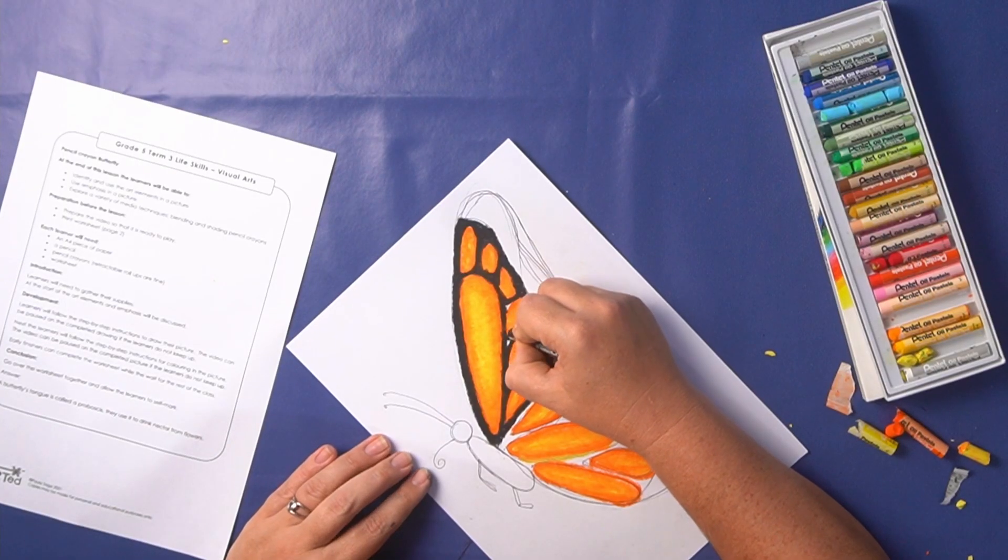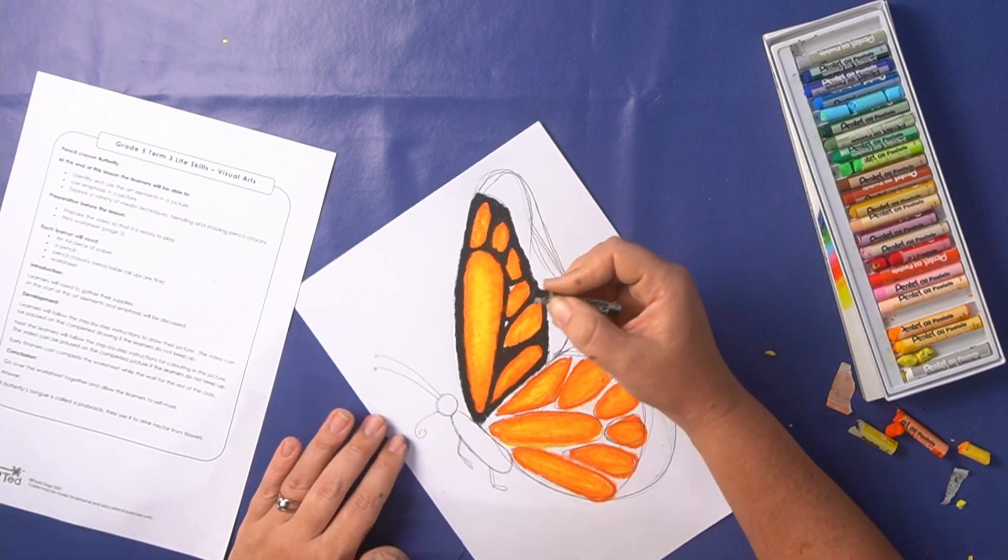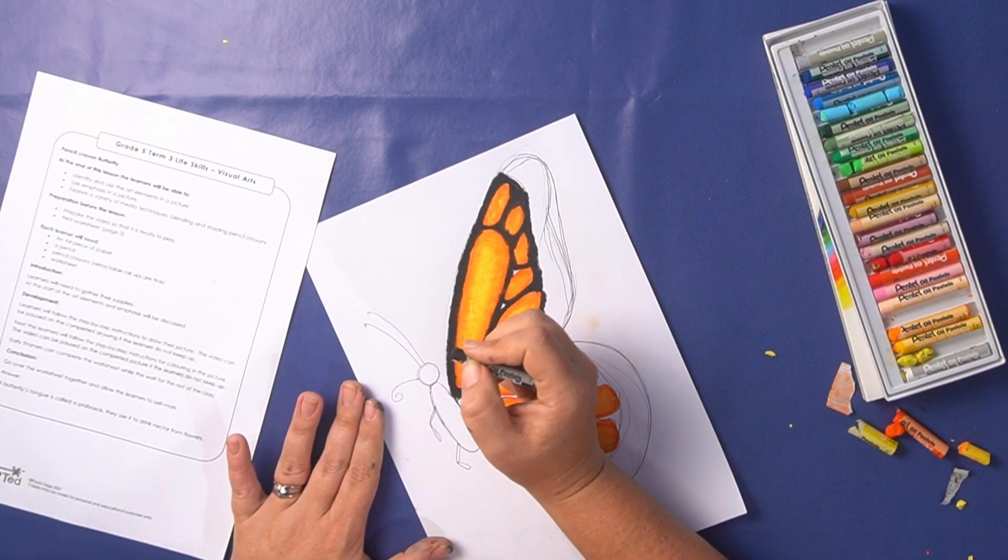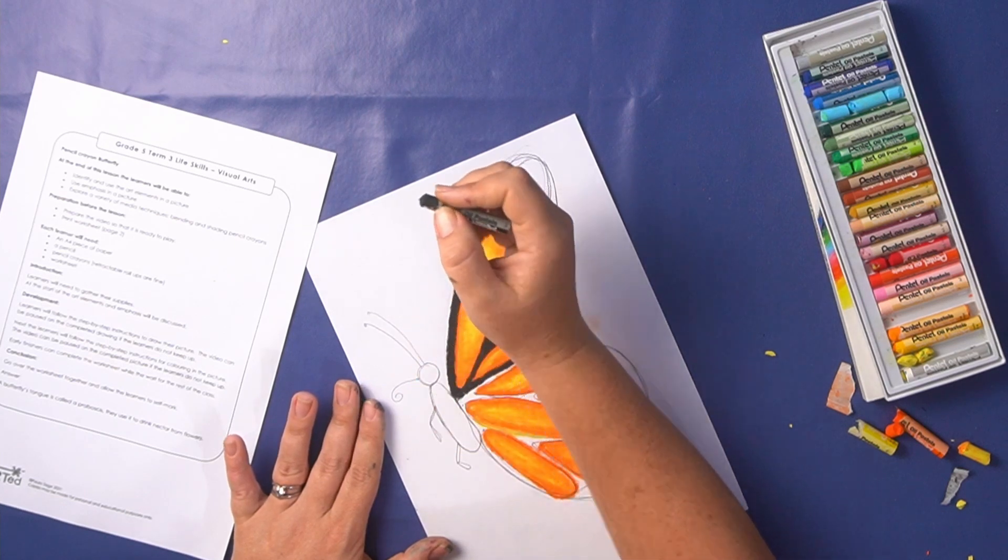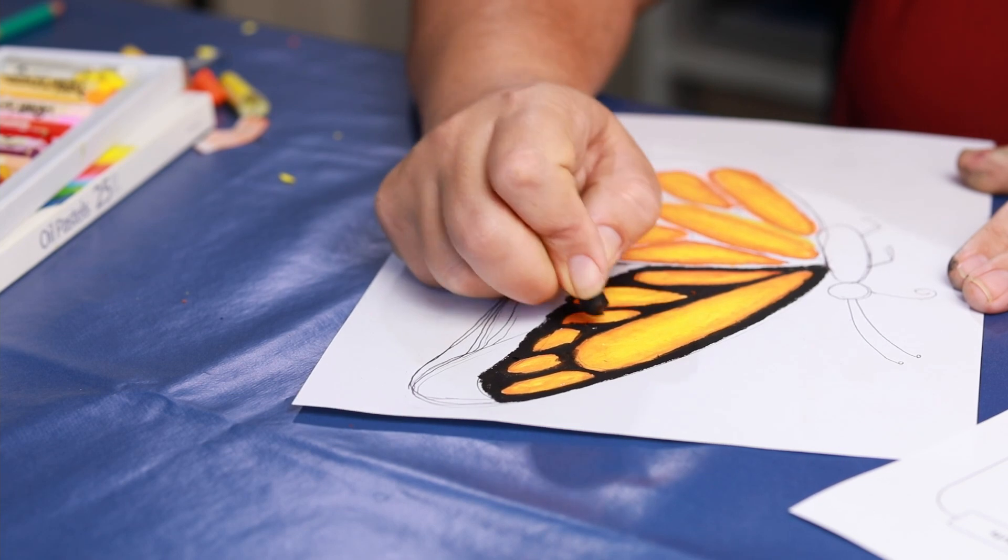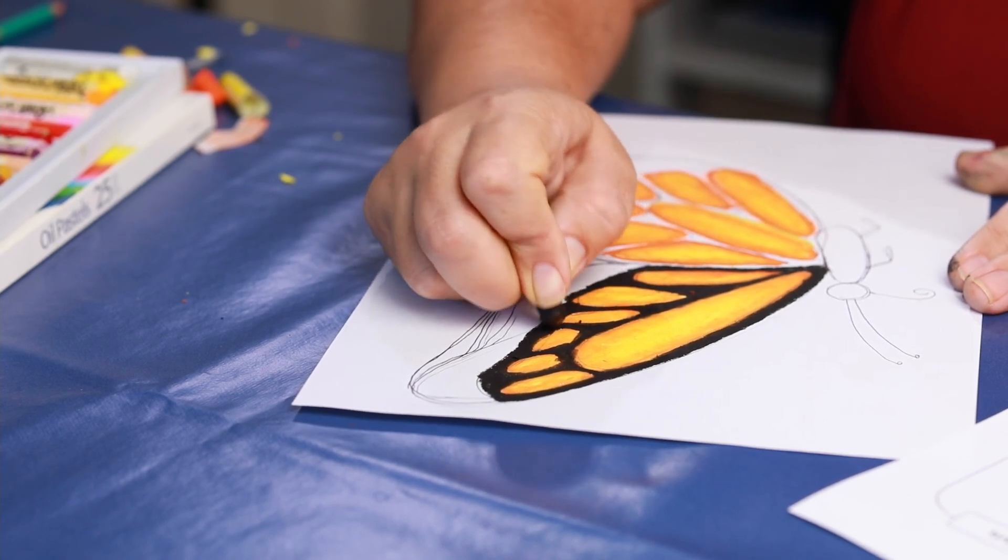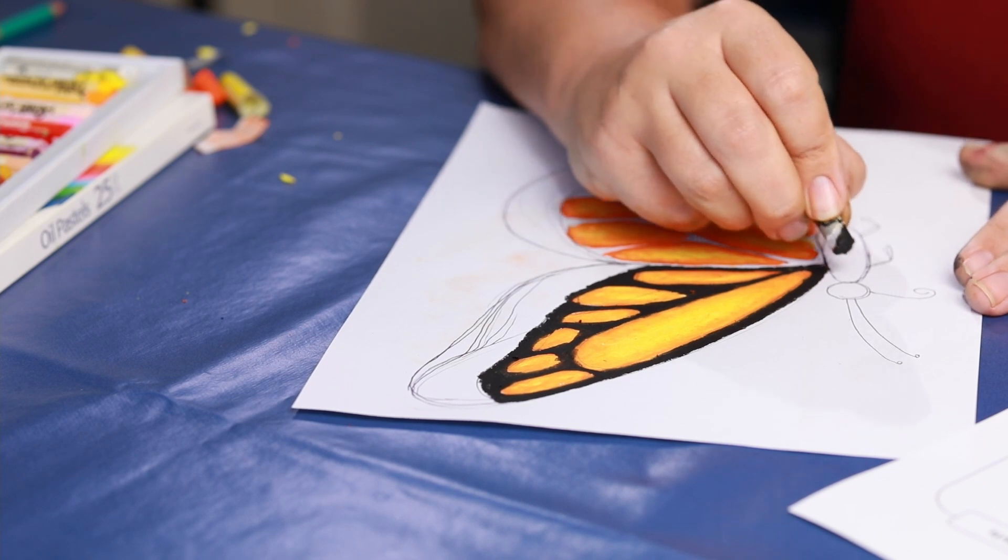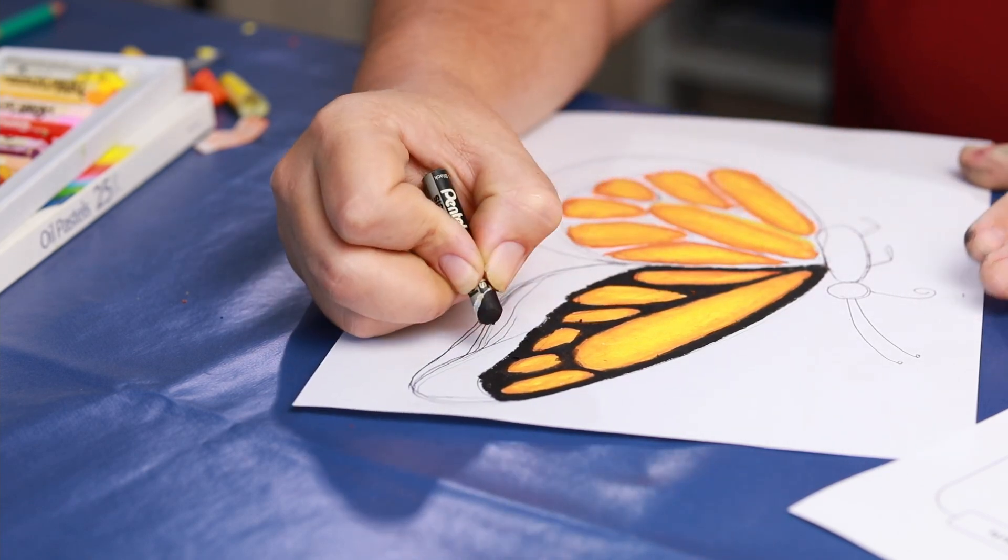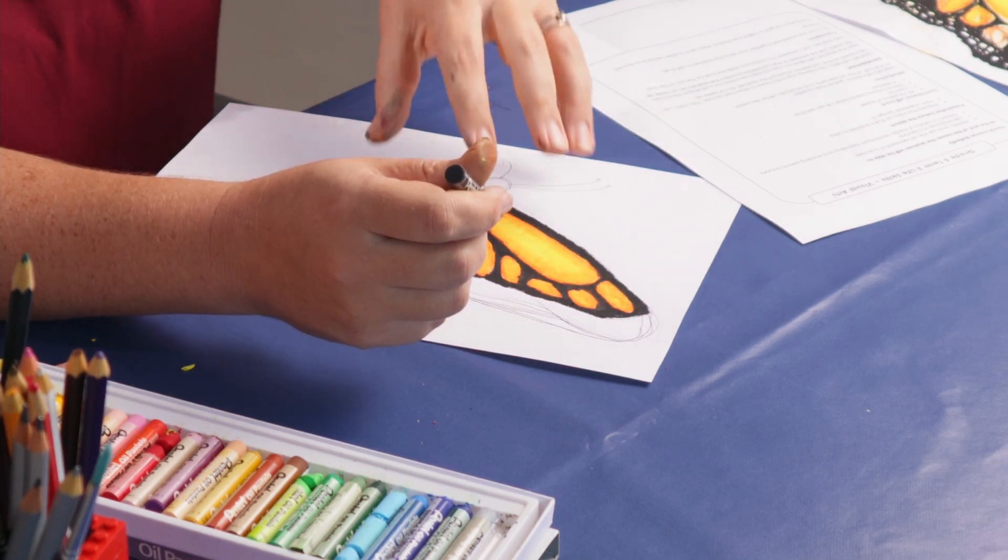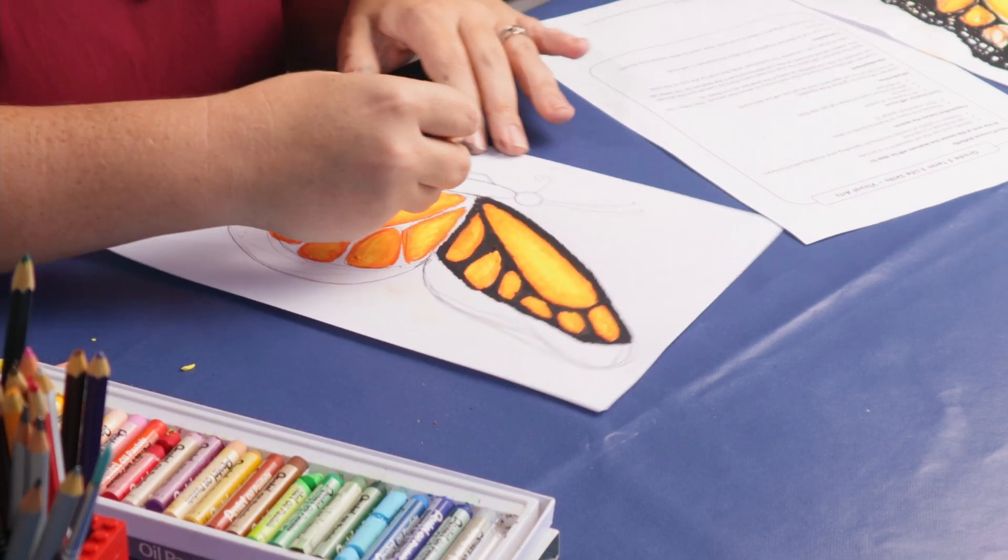So I started with the top of my wing so that I don't smudge it. If you start with the bottom, then you would have your hand over it and you would end up smudging the black into the rest of the colors. So by starting at the top, I've got less chance of smudging it. I also started on the left hand side because I'm right handed, so I'll move across. But if you are left handed, you might want to start on the right hand side and move across this way so that you don't smudge your black.